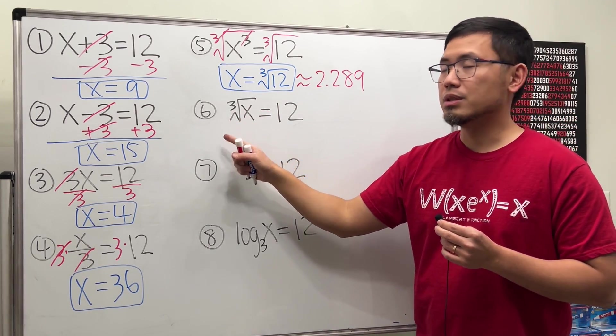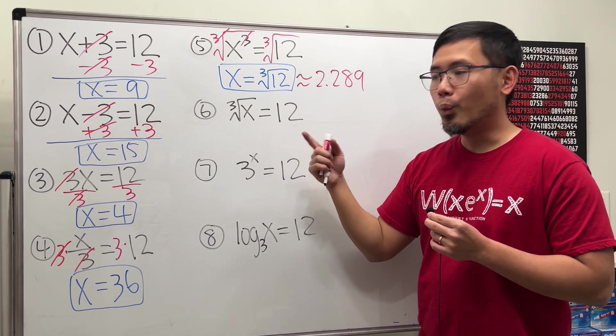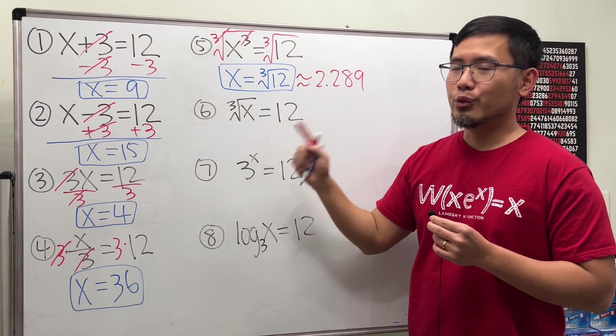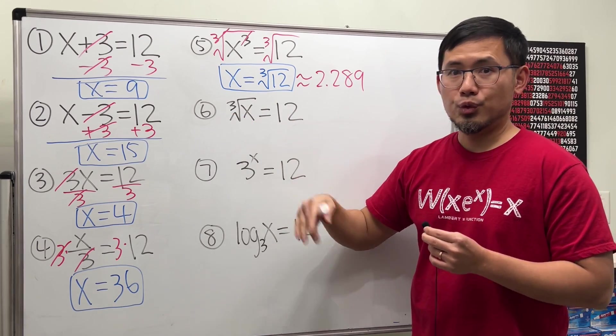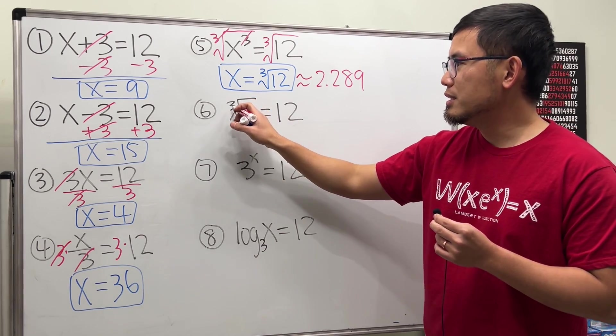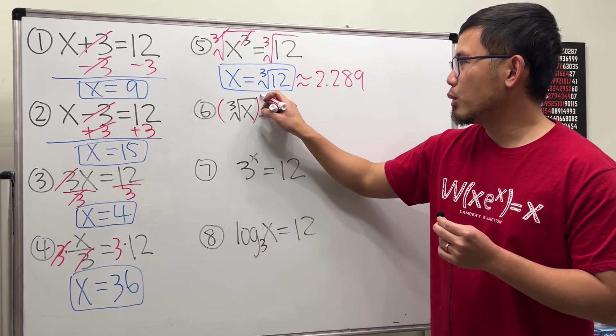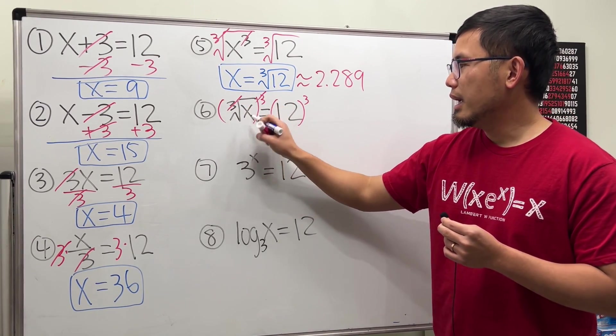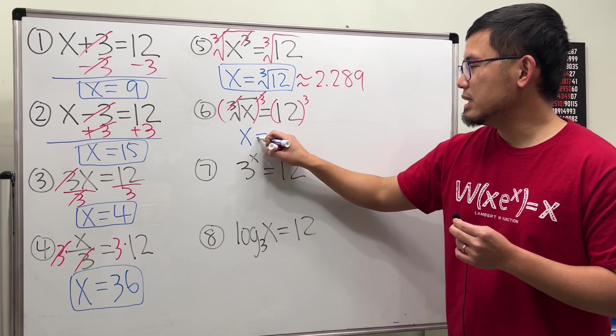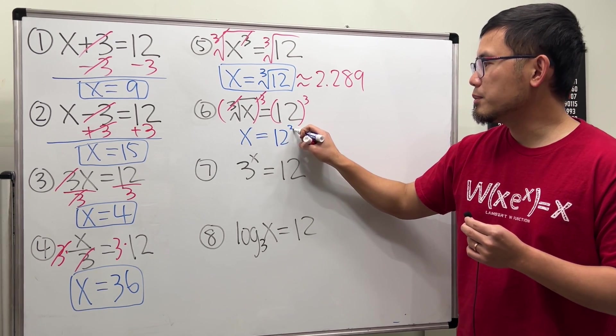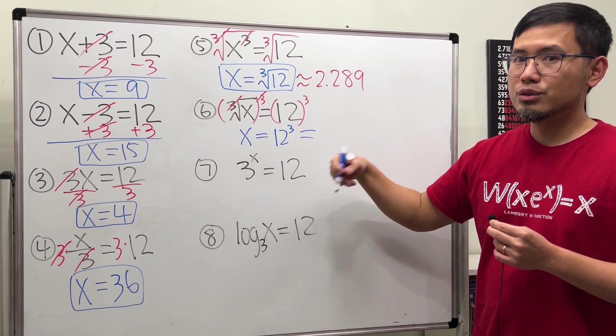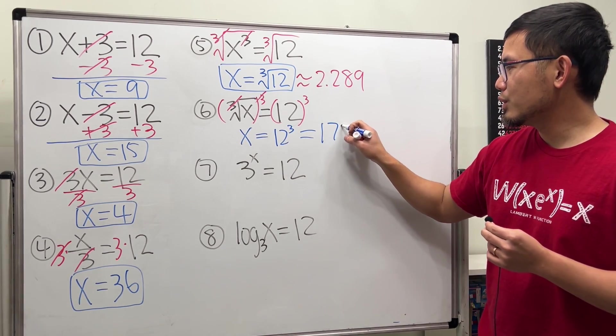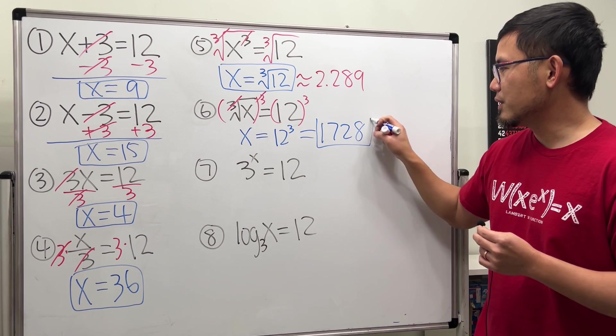Next, if we have cube root of x equals 12. Well, earlier, when we have the power, we do the radical. Right now, when we have the radical, we do the power. Match this index. So raise both sides to the 3rd power like this. Cancel. x will be by itself. And that's equal to 12 to the 3rd power. This one you can work it out. Just 12 times 12 times 12. And we get 1728. And that's the answer for this.